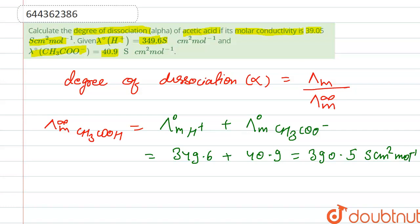So its total is 390.5. We put in this equation, so we calculate alpha is equal to 39.05 upon 390.05.